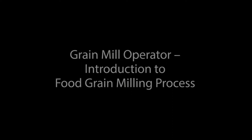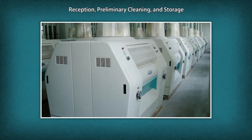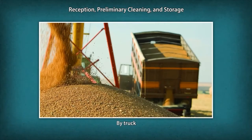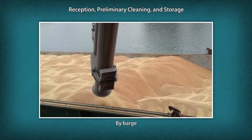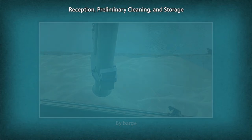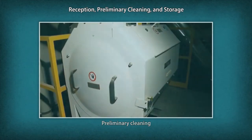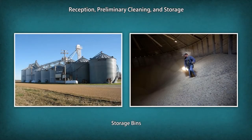Grain Mill Operator — Introduction to Food Grain Milling Process. Let us see the broad steps involved in the food grain milling process. Reception: Food grains arrive at mill elevators by truck, rail, barge or ship and are transferred by conveyors to the elevator head house. Preliminary cleaning occurs prior to storage. After cleaning, the wheat is conveyed to storage bins. As grain is needed for milling, it is withdrawn from the storage elevator and conveyed to the mill area.